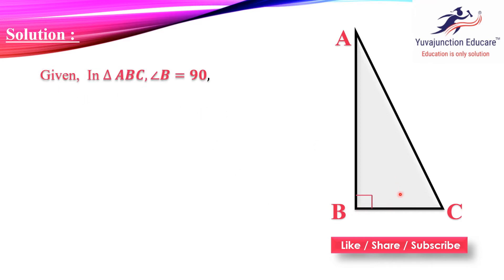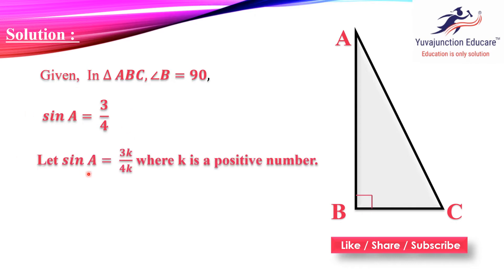In triangle ABC, angle B is 90°, and from the question, sin A is equal to 3 by 4. So what we are going to do is write: let sin A equal to 3k by 4k, where k is a positive number.